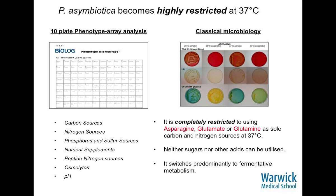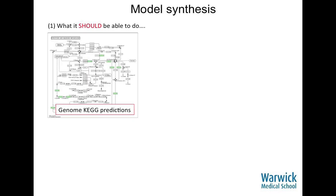To our surprise, it becomes almost disabled at 37 degrees. You'd think it would be a vicious human pathogen, but it becomes very restricted in what it can use as carbon and nitrogen sources — only asparagine, glutamate, or glutamine as the sole source at 37 degrees. At 28, it can use anything. It can't use sugars at 37, none of the other amino acids, and it switches from oxidative phosphorylation to predominantly fermentative respiration metabolism at 37. So this thing becomes incredibly restricted and disabled at 37 degrees.